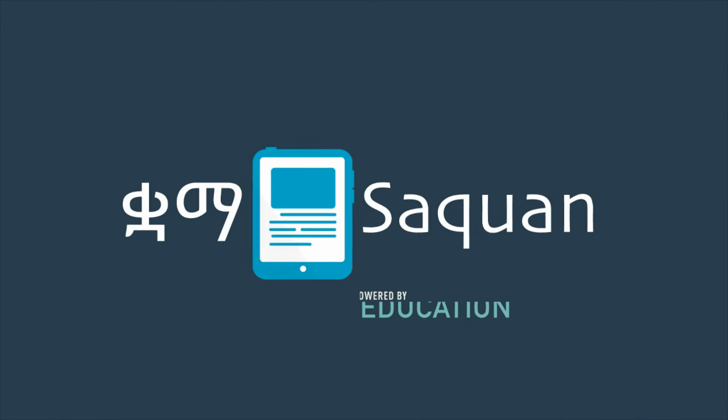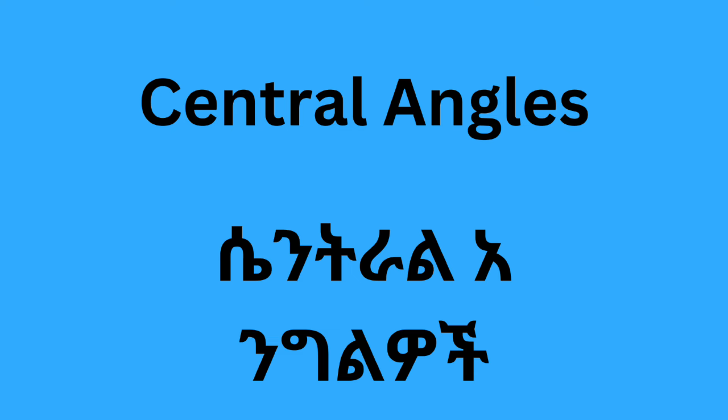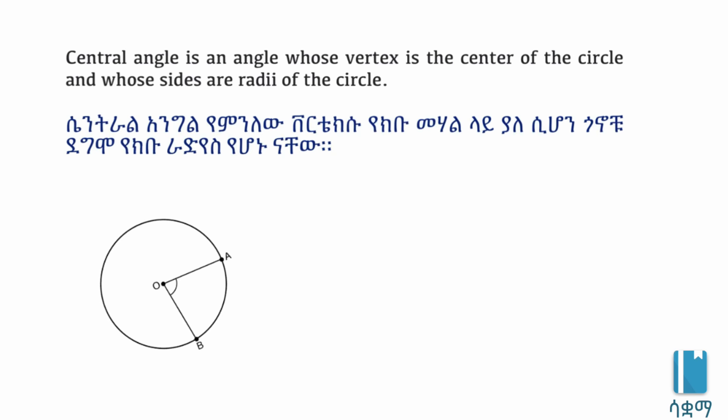What is the central angle of the circle? By definition, the central angle of the circle is an angle whose vertex is the center of the circle.